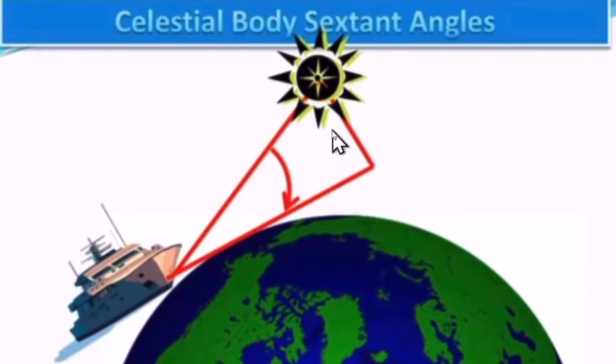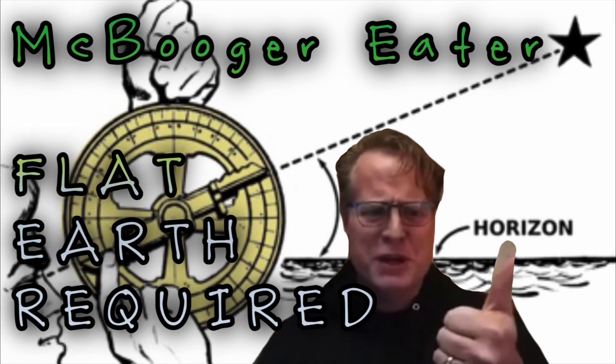So what kind of horizon are we looking at in a sextant, then, Virus? The visible horizon? And is that geometric Earth curve?